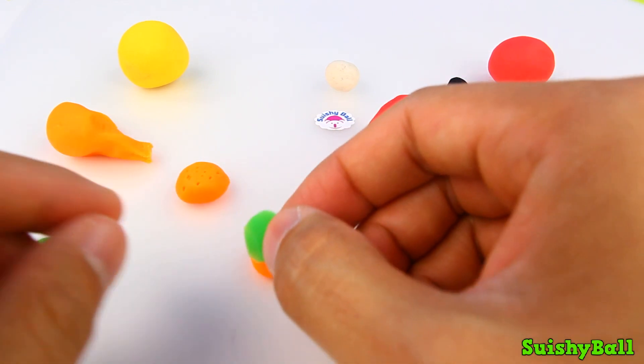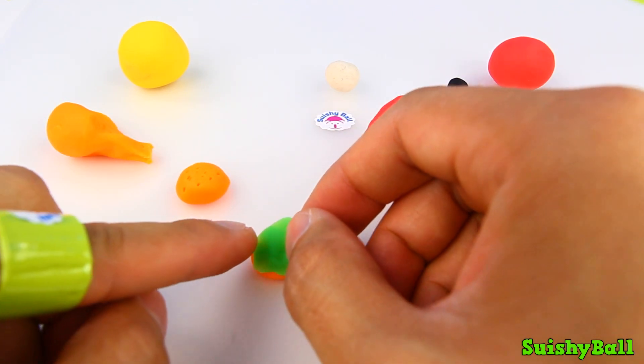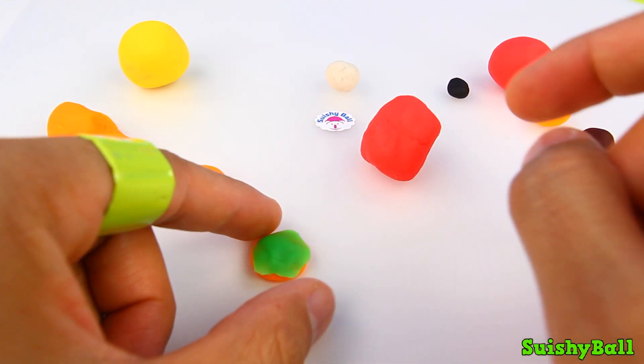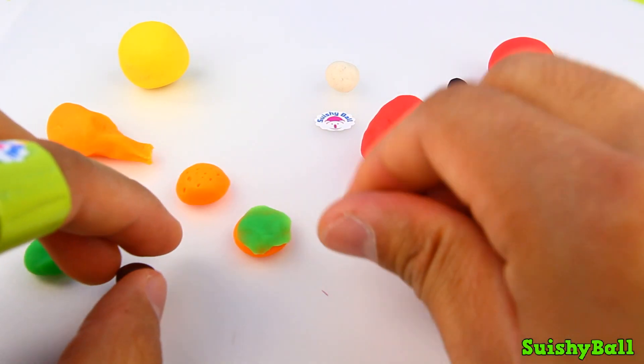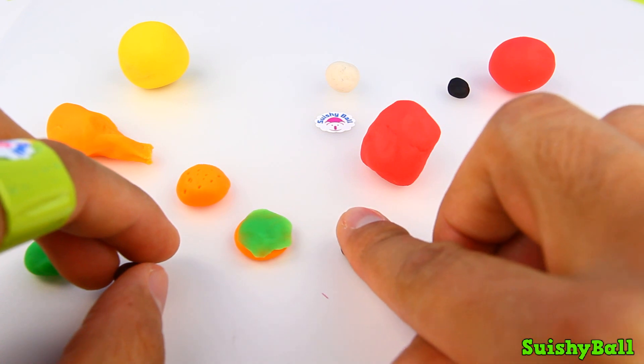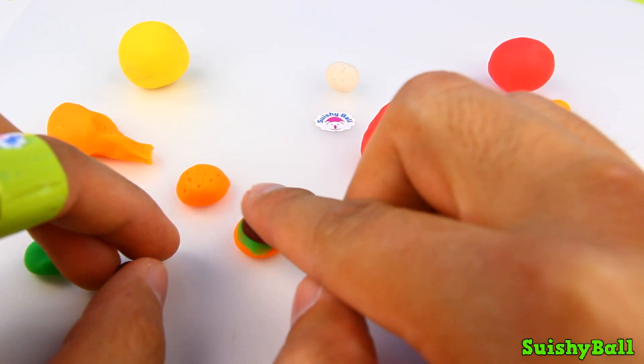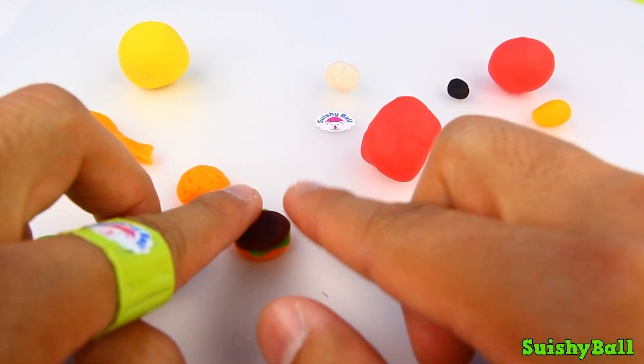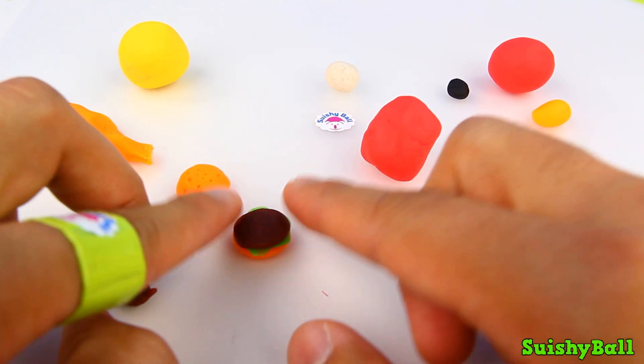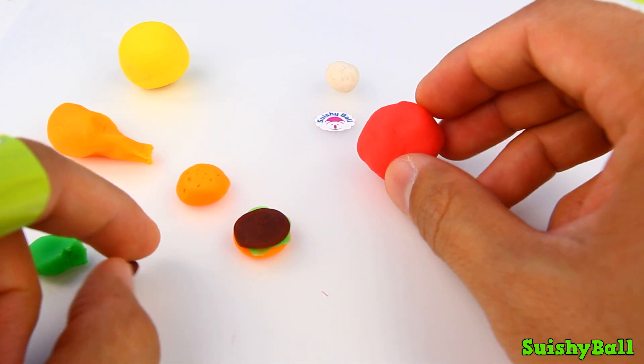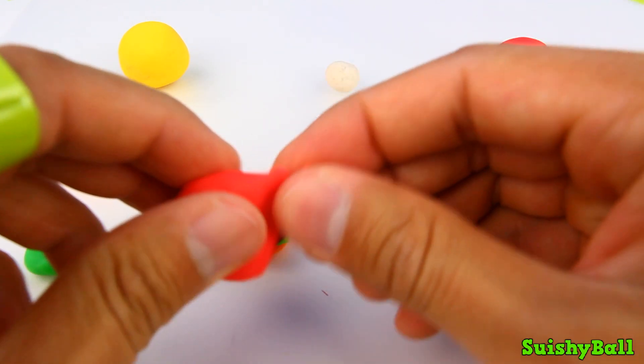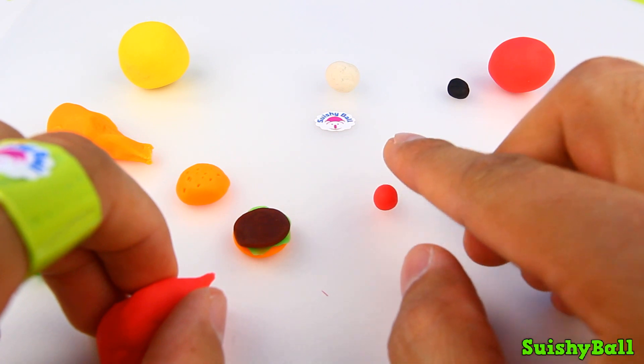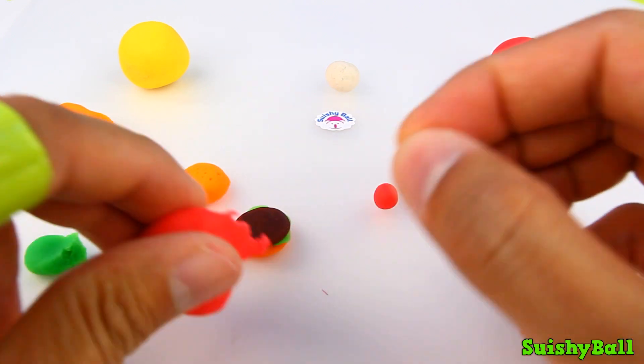Okay, then I want to roll out a piece of brown play-doh and this will be the meat patty. And then comes a slice of tomato.